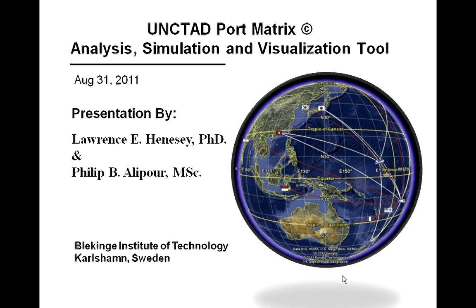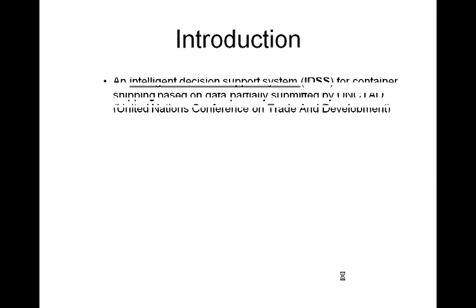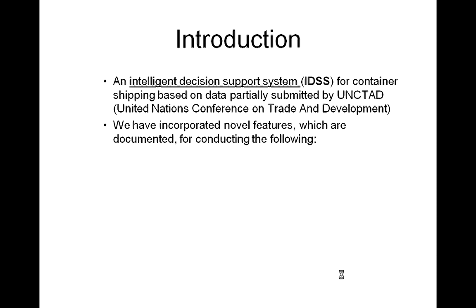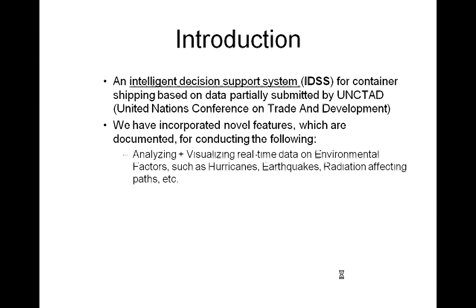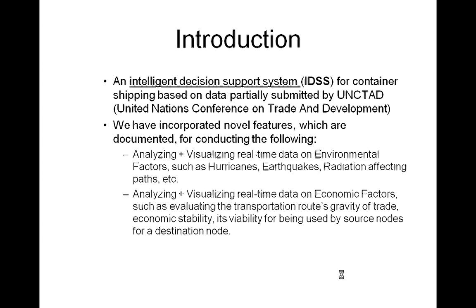It is a tool for the analysis, simulation, and visualization of data that has been compiled over the last 10 years. The UNCTAD port matrix is an intelligent decision support system in which container shipping data has been partially submitted by UNCTAD. We have incorporated features for analyzing and visualizing real-time data on environmental factors such as hurricanes, earthquakes, and radiation affecting paths, as well as economic factors such as transportation routes, gravity of trade, economic stability, and viability for source nodes to destination nodes.